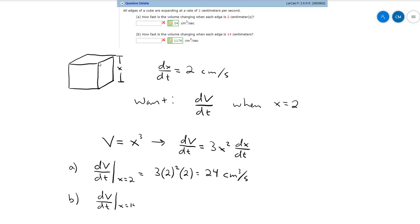and then for part b we just want to find dv/dt when x is equal to 14. So same idea only now we're going to plug in 14 for x. dx/dt stays the same so that's still 2.